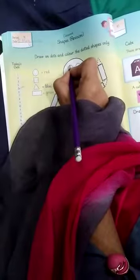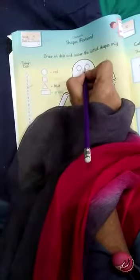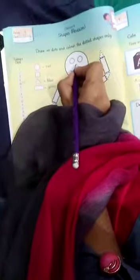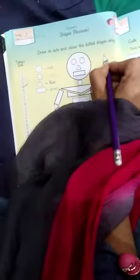हमने इनको draw करना है. यह जहां पे dotted lines है ना, उन सब को हमने draw करना है. We make circle, now we make triangle. इन में आपको 4 shapes दी गई है.